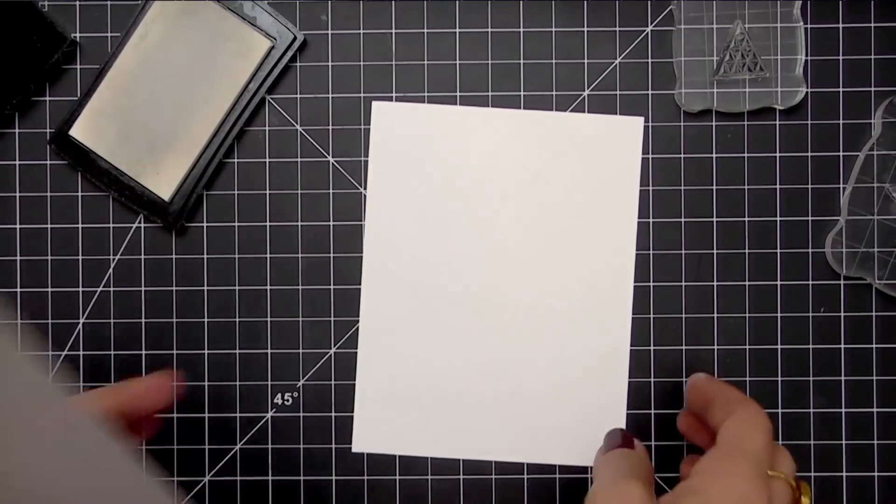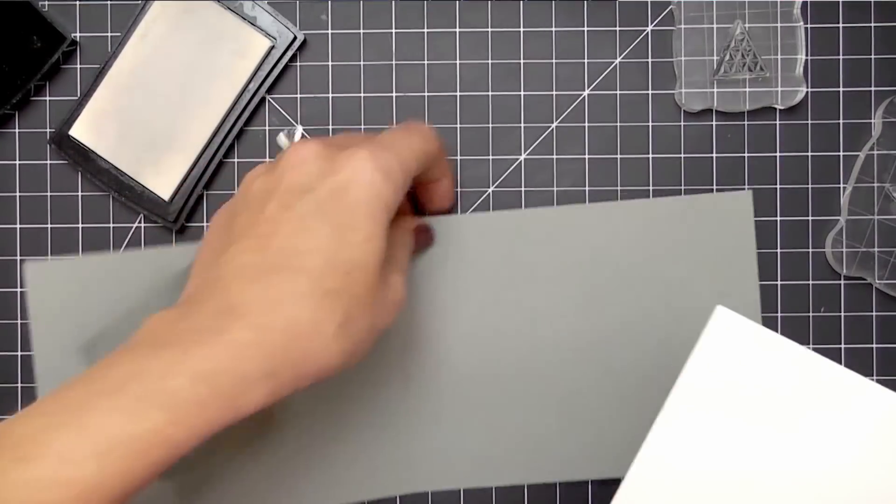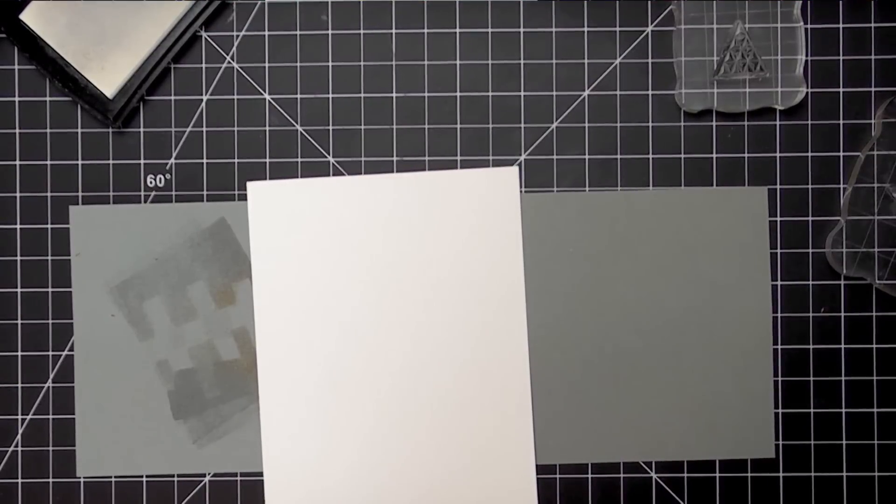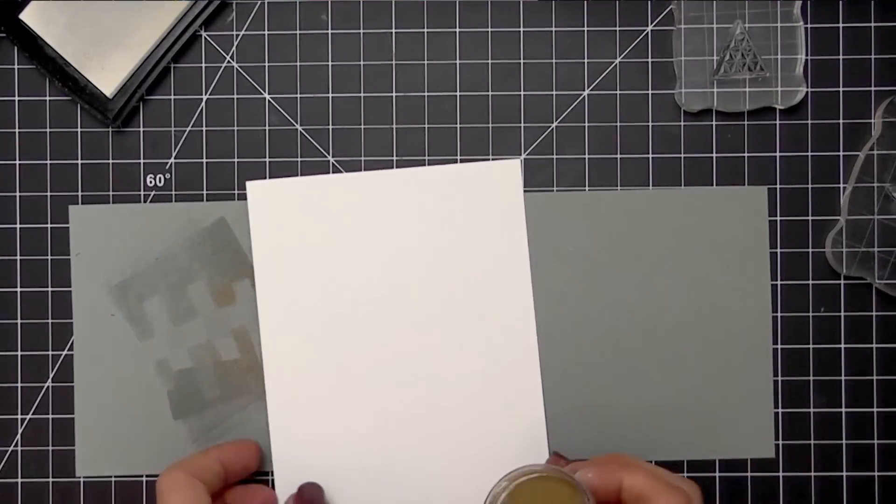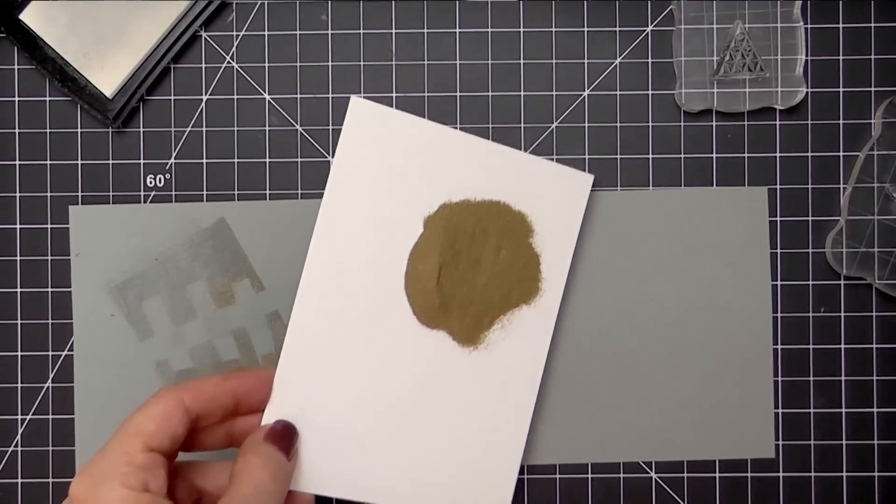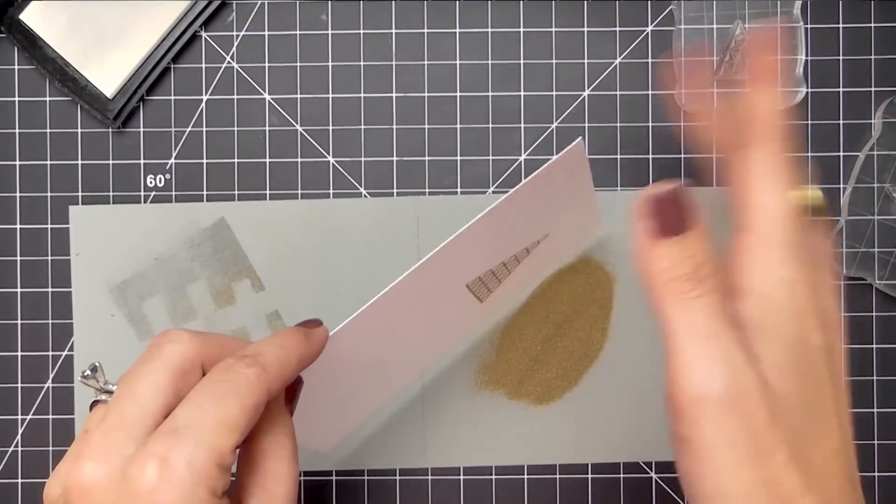I am going to use my grid mat here to try and make sure that my lines are straight. Since I'm going to try to create a pattern, I want to make sure that everything is stamped straight and nothing is crooked. Then I'm going to lay down some scratch paper and pour my embossing powder over the area that I just stamped.